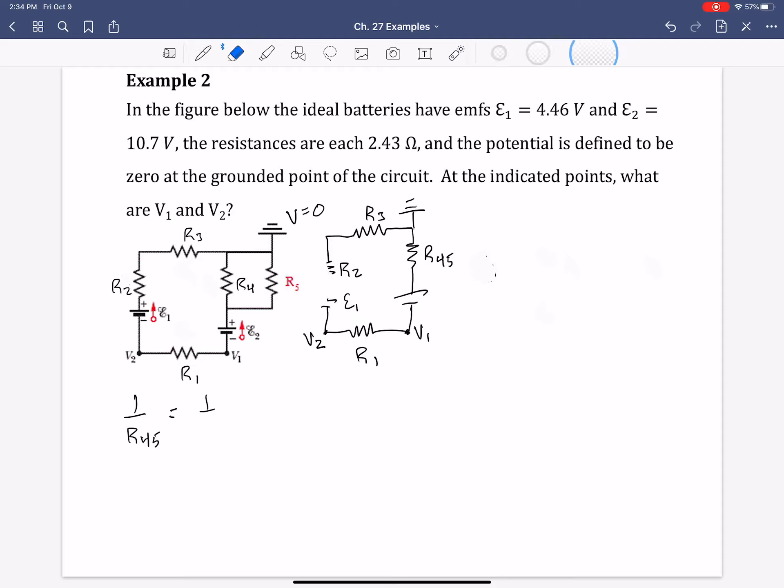So we have 1 over R4 plus 1 over... I just realized I did them the same. Let's fix this. That is R5.